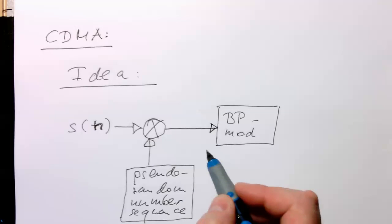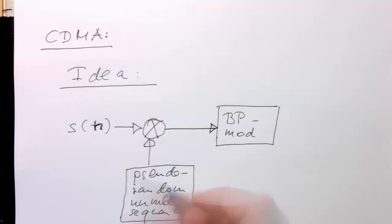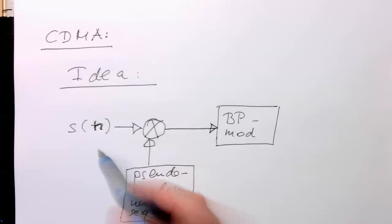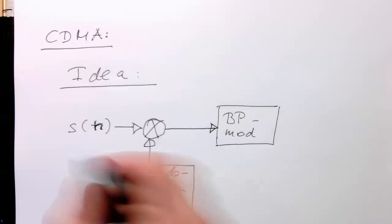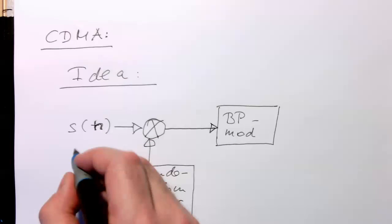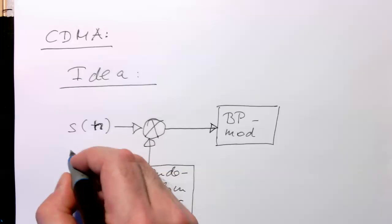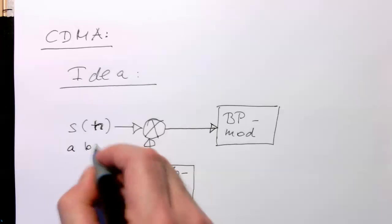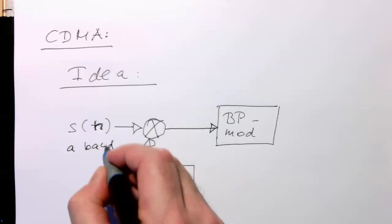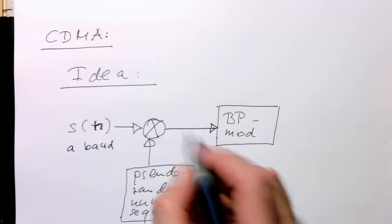And the idea is also that this bit rate here is higher than this one here. So for example, if this is here, let's call this a bit rate. Then this sequence here, if we call this b bit rate,